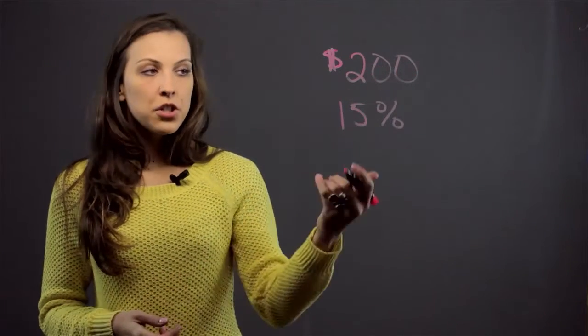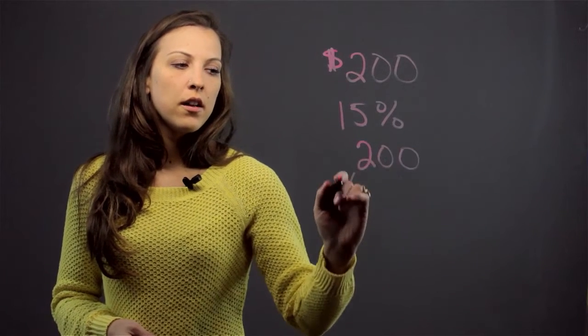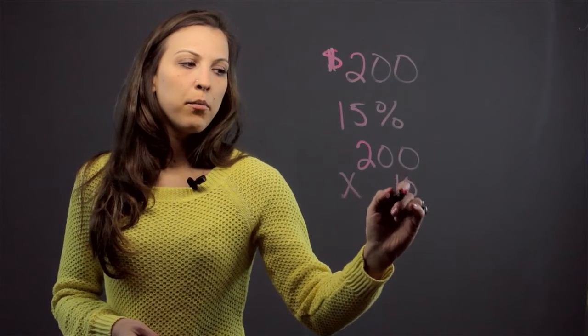So if the salesperson's commission is 15% on an item they sold for $200, then what we do to find out their commission is just take 15% of 200 by multiplying 200 times 0.15.